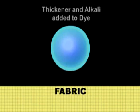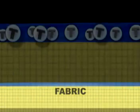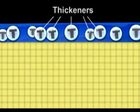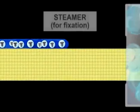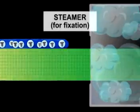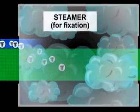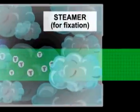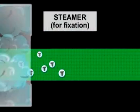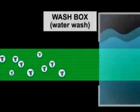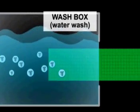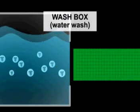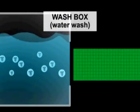With dyes, the thickener also holds the color in place after drying until the printed fabric goes through a fixation process, such as steaming. During fixation, the dye transfers from the thickener and diffuses into the fiber. The thickener is then washed off the fabric before any chemical or mechanical finishing is performed.